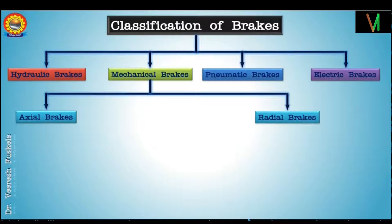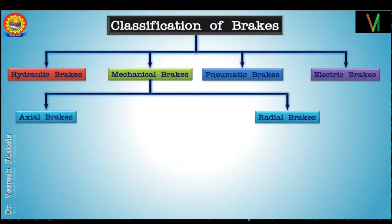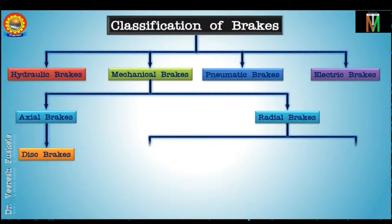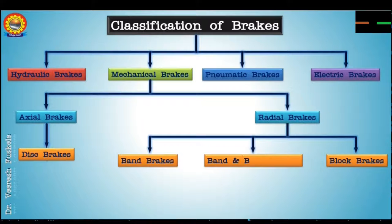In axial brakes, the braking force is applied parallel to the axis, and in radial brakes, the braking force is applied in the radial direction. Axial brakes are generally the disc brake. Radial brakes are further classified as band brake, block brake, and band-and-block brake.